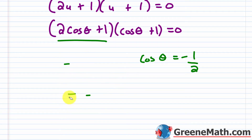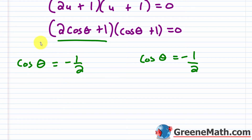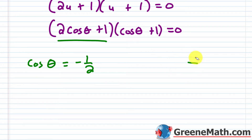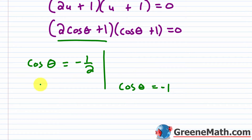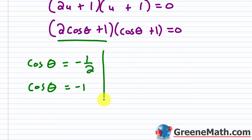For the second factor, cosine theta + 1 = 0 gives cosine theta = negative 1. This happens at 180 degrees (or pi in radians). Let's go to the unit circle to confirm all solutions at once. For cosine theta = negative 1/2, the x-value of negative 1/2 occurs at 120 degrees (2 pi over 3) and 240 degrees (4 pi over 3). For cosine theta = negative 1, it's at 180 degrees (pi).